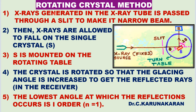The procedure for the rotating crystal method is explained here. X-rays are generated in the X-ray tube and passed through a slit to make a narrow beam. The X-rays are then allowed to fall on the single crystal. In the rotating crystal method, a single crystal is used and monochromatic X-rays are used.